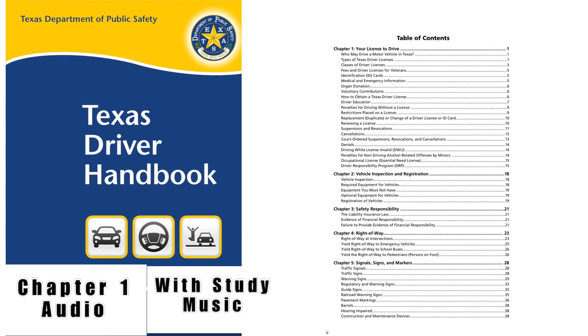Class A Driver License: A Class A Driver License permits a person to drive any vehicle or combination of vehicles described under a Class B or Class C driver license, and a vehicle or combination of vehicles with a gross combination weight rating (GCWR) of 26,001 pounds or more, provided the Gross Vehicle Weight Rating (GVWR) of the vehicles towed is in excess of 10,000 pounds. A Class A Driver License does not permit a person to drive a motorcycle or moped.